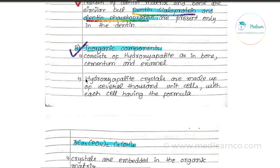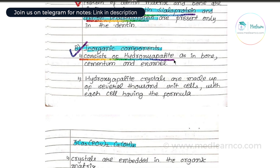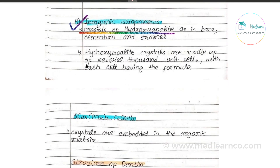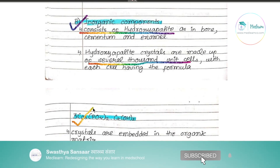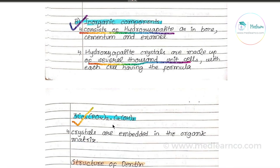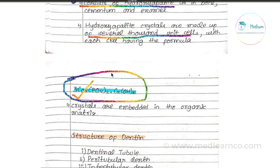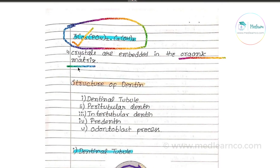The inorganic content consists of hydroxyapatite crystals, similar to bone and enamel. Hydroxyapatite crystals are made up of several thousand units, each with the formula: 3 calcium phosphate and calcium hydroxide. These crystals are embedded in the organic matrix of collagen fibers and ground substance.